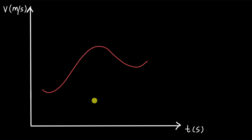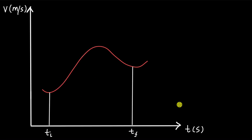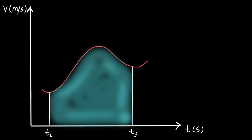In this video, we will understand how to figure out the area under a curved VT graph. We want to figure out the area between the time limits T_I and T_F — all of this shaded blue area.